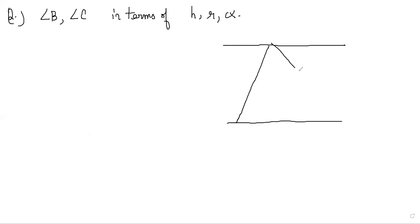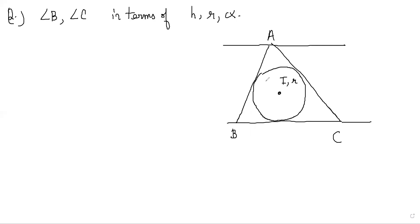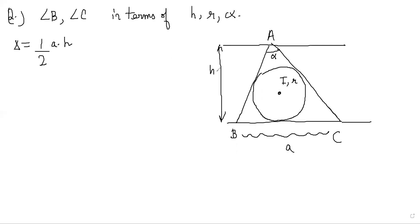We have a triangle A, B, C with an incircle. The center is I, radius is R, and angle A is alpha. The triangle's area equals half times a times H, because a is the base side and H is the perpendicular distance between lines X and Y. We also have another formula: area equals R times s, where s is the semi-perimeter multiplied by the inradius. Therefore, 2s divided by a equals H divided by R.